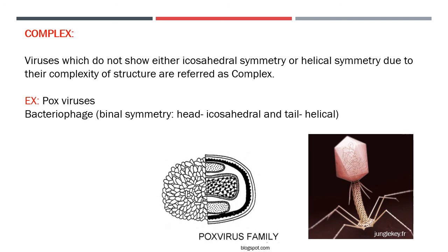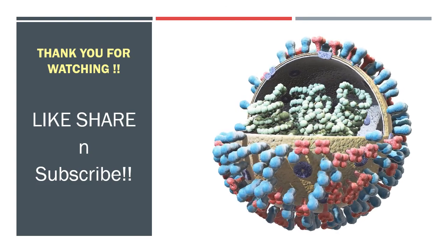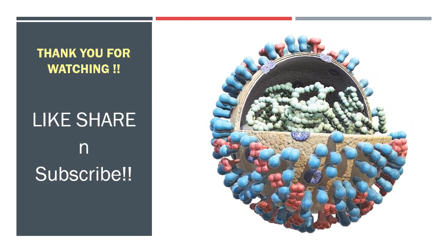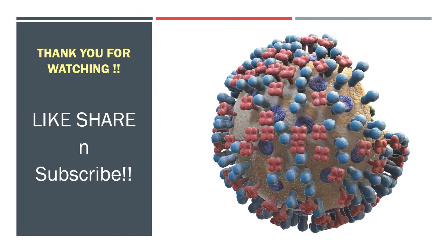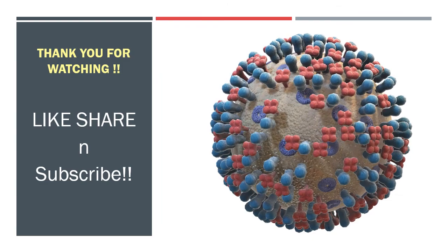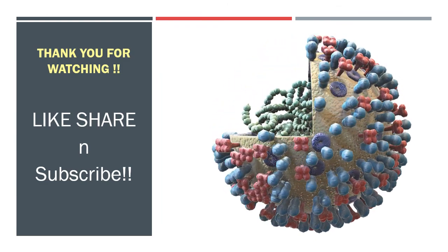Complex symmetry is simple to remember: anything that cannot fit icosahedral or helical symmetry goes into complex symmetry. The tricky part is icosahedral symmetry — you need to know the triangulation number and the number of subunits. Helical symmetry is quite simple. Thank you for watching — please like, share, and subscribe to the channel. Keep learning!